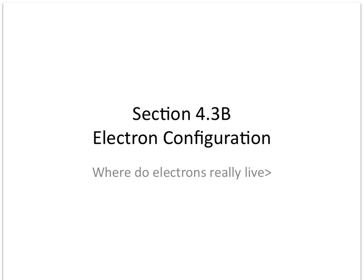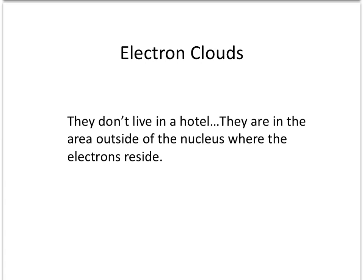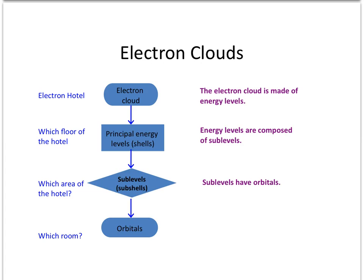In section 4.3, we're going to talk about where electrons really live and learn how to write electron configurations. As seen in the previous section, electrons do not live in a hotel. They are in the area outside the nucleus called the electron cloud. The electron cloud is broken down into energy levels, sometimes called shells, which are broken down into sub-levels, and sub-levels into orbitals. The orbital is the region of space where there's a high probability of finding an electron.